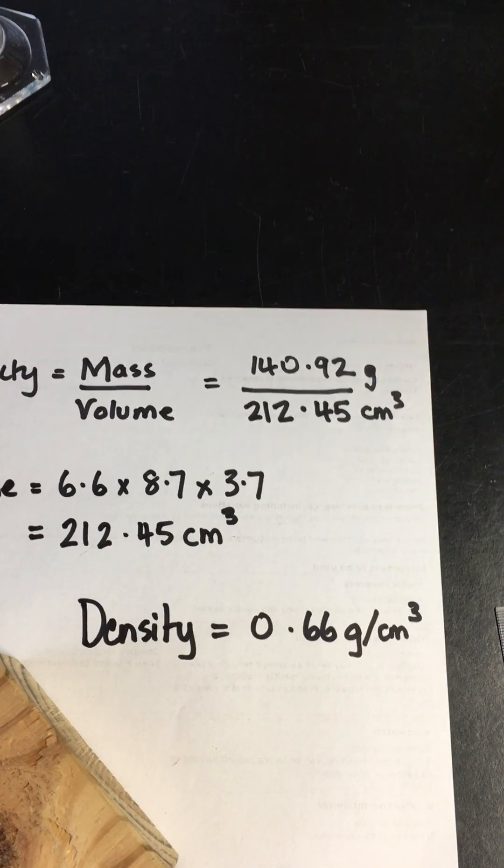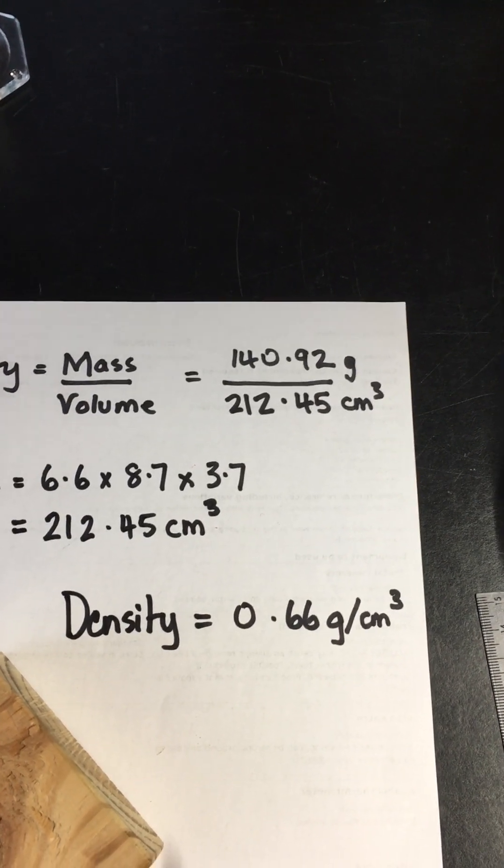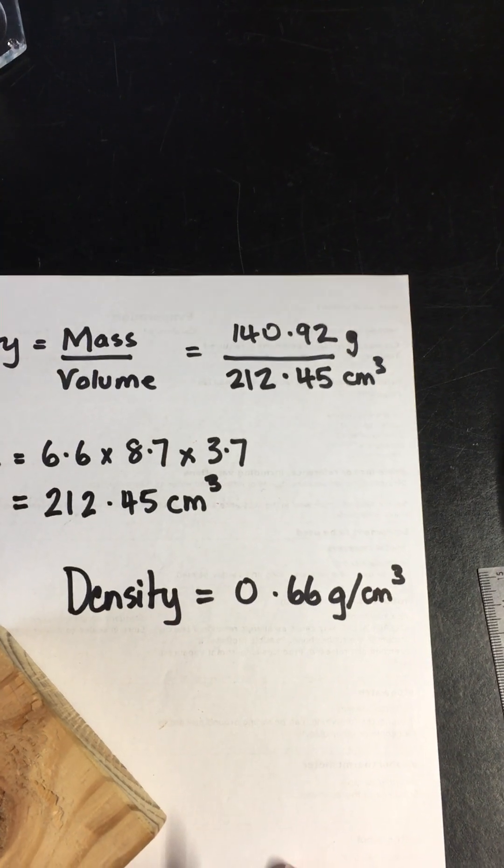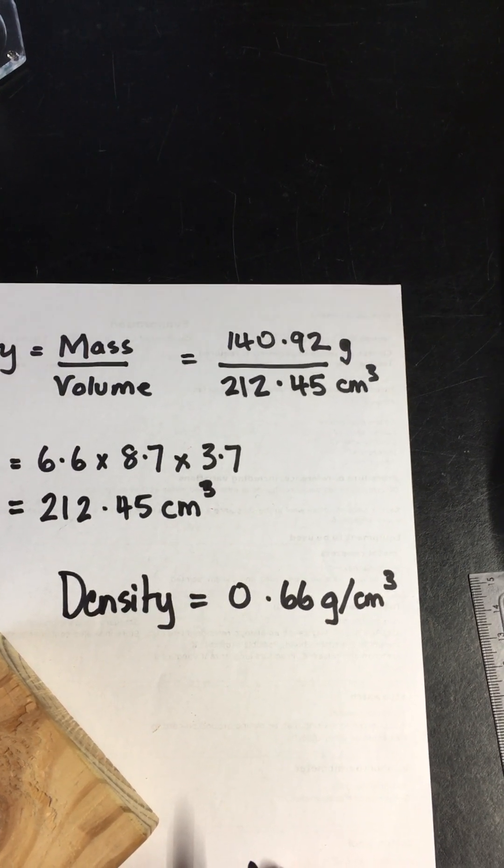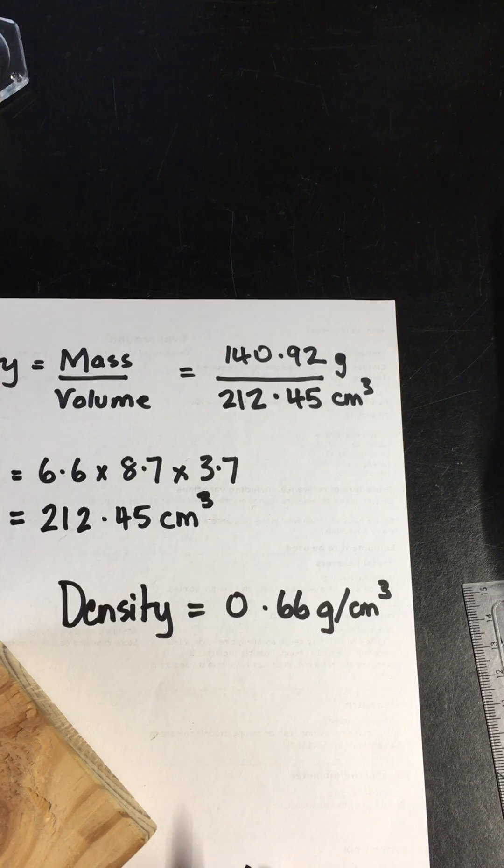That number of 0.66 tells us something quite interesting. It tells us that this wood would float. The density of water is 1.